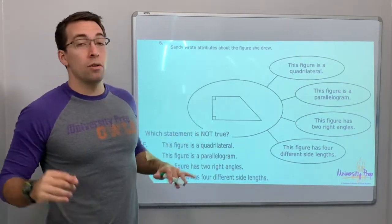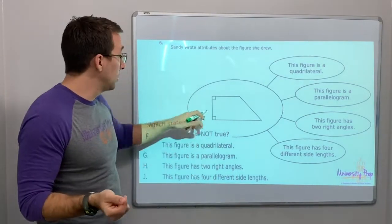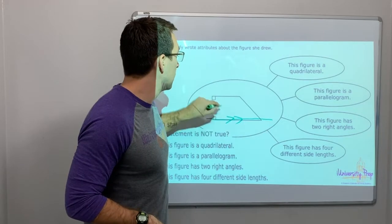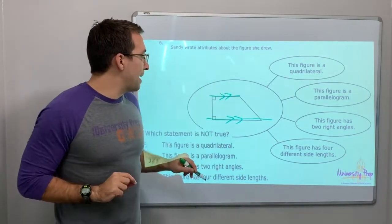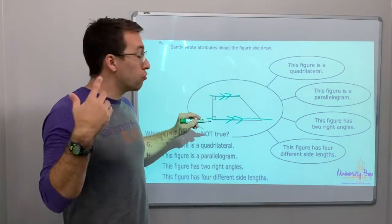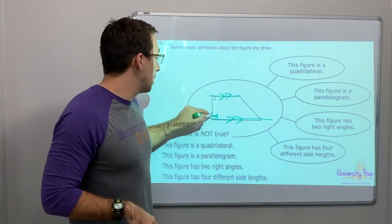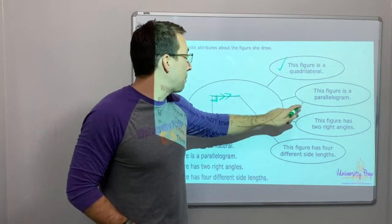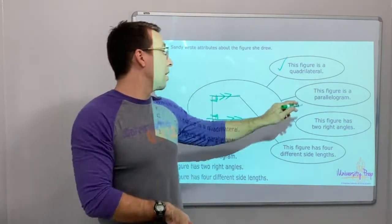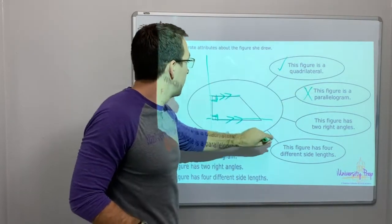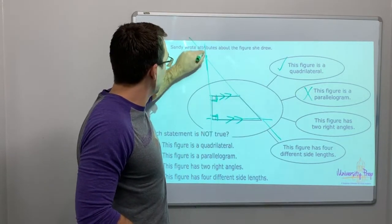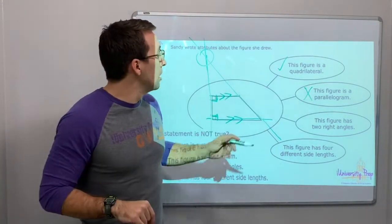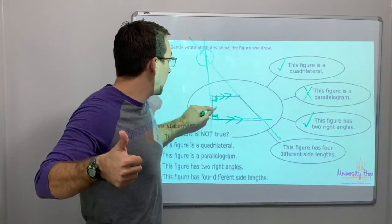Sandy wrote attributes about the figure she drew. This is a trapezoid — it has one set of parallel lines. This is actually a right trapezoid because it has right angles. The statement says this figure is a quadrilateral — yes. This figure is a parallelogram — wrong. If we extend those lines, they will intersect, so it's not a parallelogram. Trapezoids are not parallelograms.